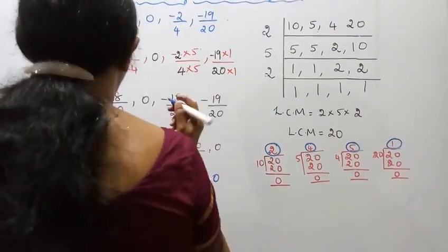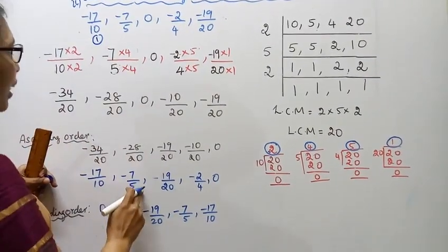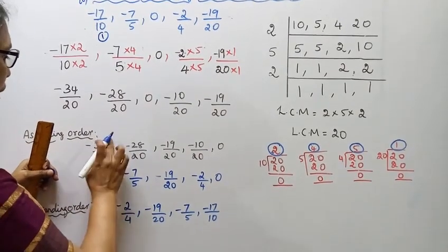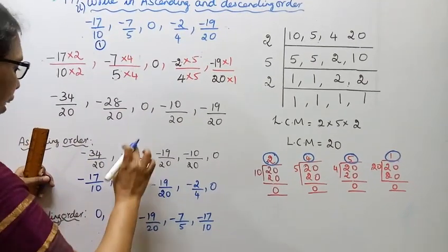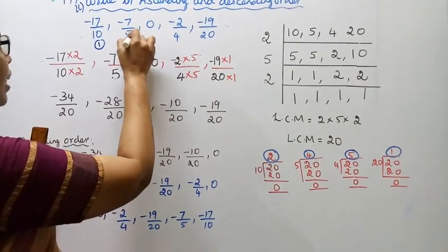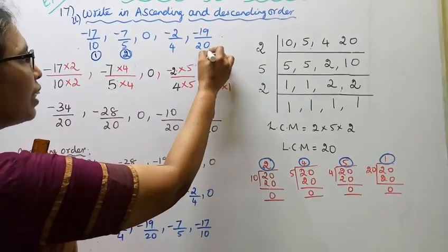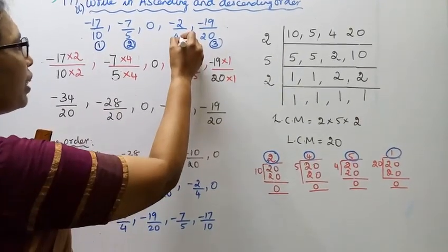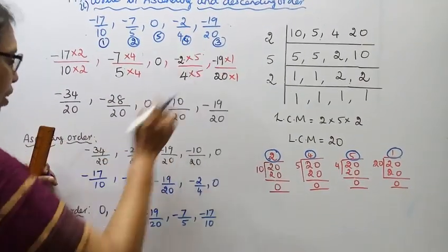Ascending order is: -34/20 which is -17/10, then -28/20 which is -7/5, then -19/20, then -10/20 which is -2/4, then 0. This is the answer.